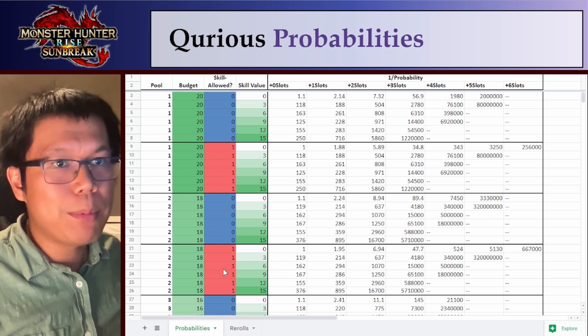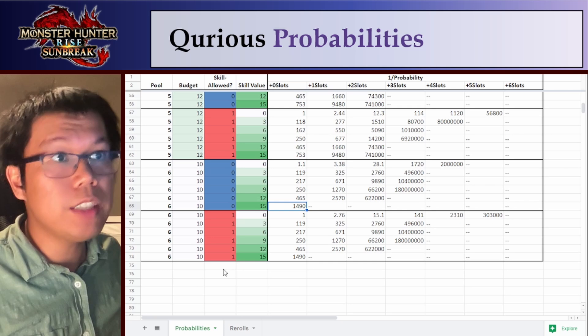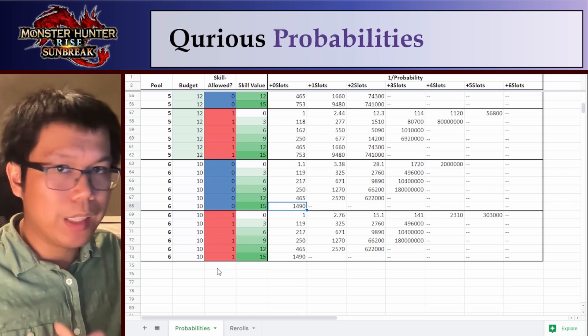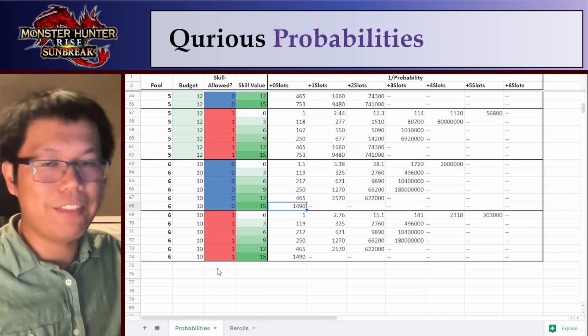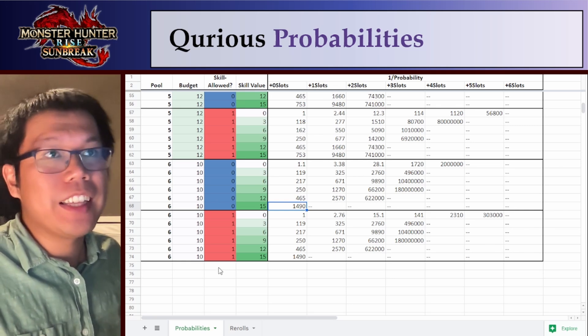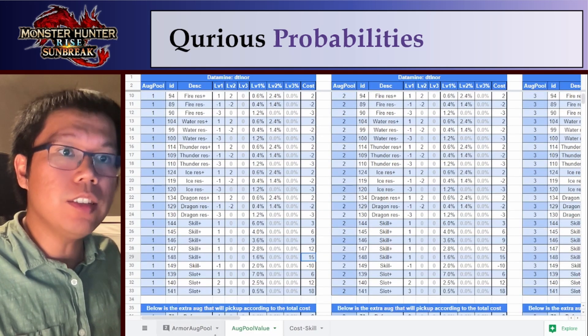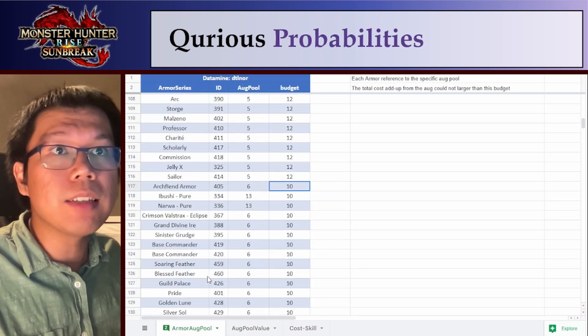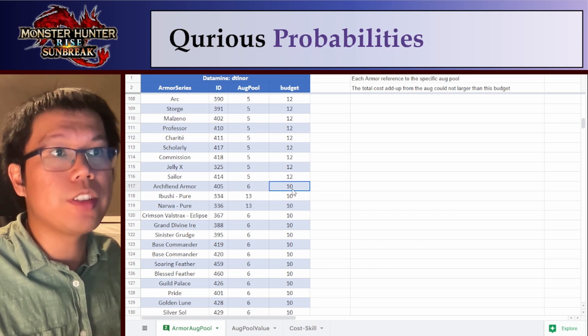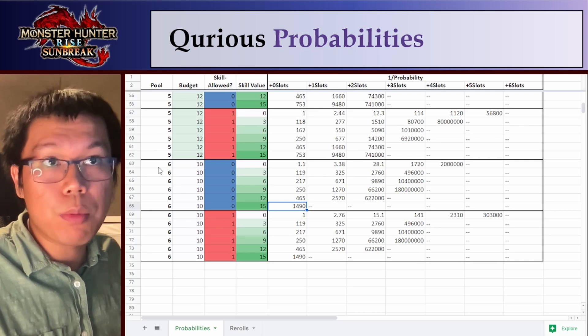And use this code to figure out all the probabilities of getting exactly what you want. So let's work through an example together. Let's say we have some archfiend armor, for example the archfiend feet, and we want to have chain crit, and we want it to have plus 1 slot, because if it has plus 1 slot, it'll get a 4 slot piece, which we like. So what we want to do is we want to look at this Tilnor sheet and find archfiend armor to figure out what pool it is. We see that archfiend armor is in pool 6 with budget 10.